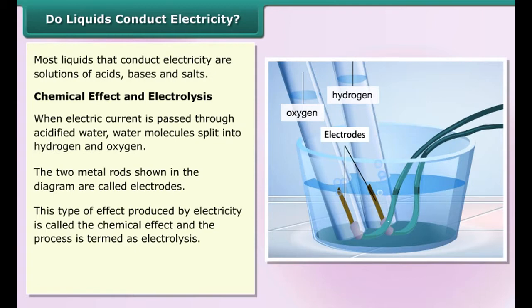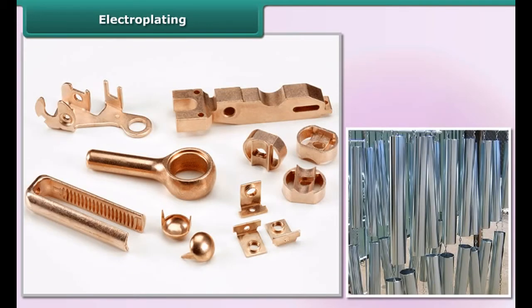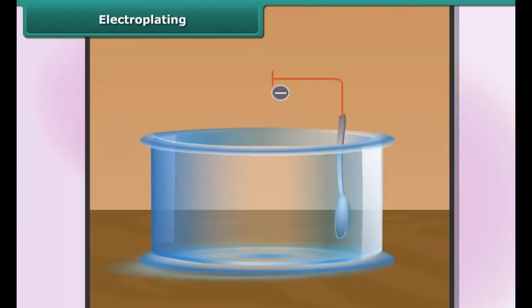Chemical effect and electrolysis: When electric current is passed through acidified water, water molecules split into hydrogen and oxygen. The two metal rods shown in the diagram are called electrodes. This type of effect produced by electricity is called the chemical effect, and the process is termed as electrolysis. Can we use pure water in the place of acidified water? Find out.